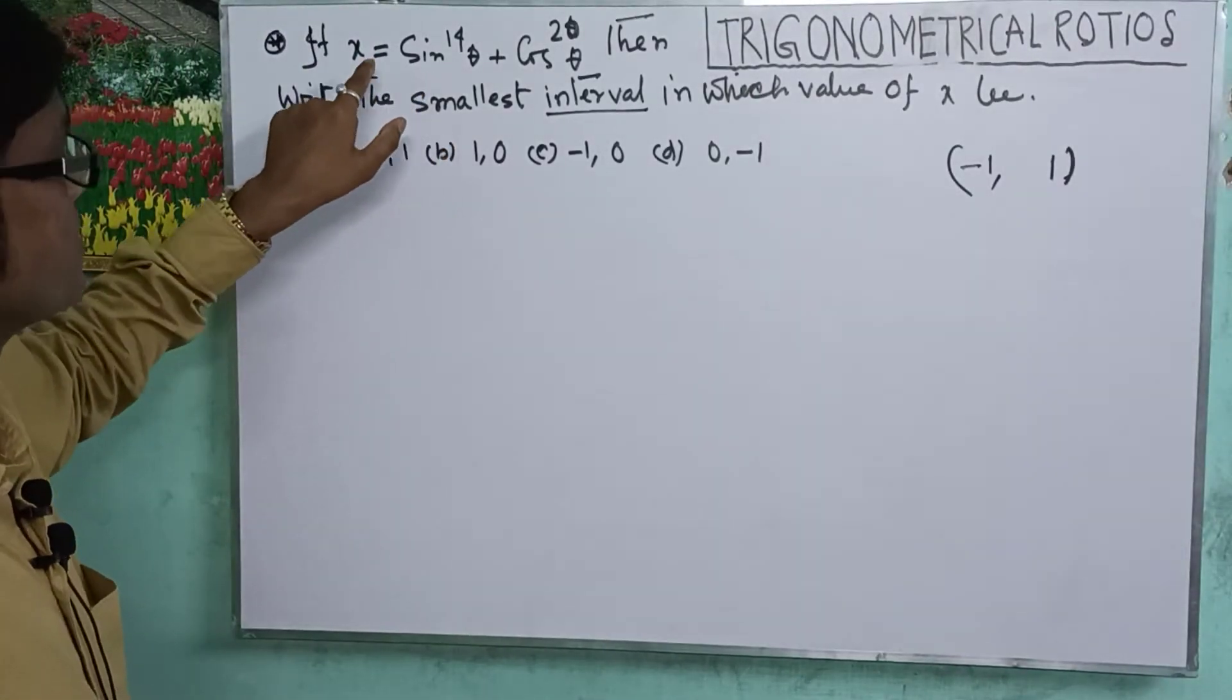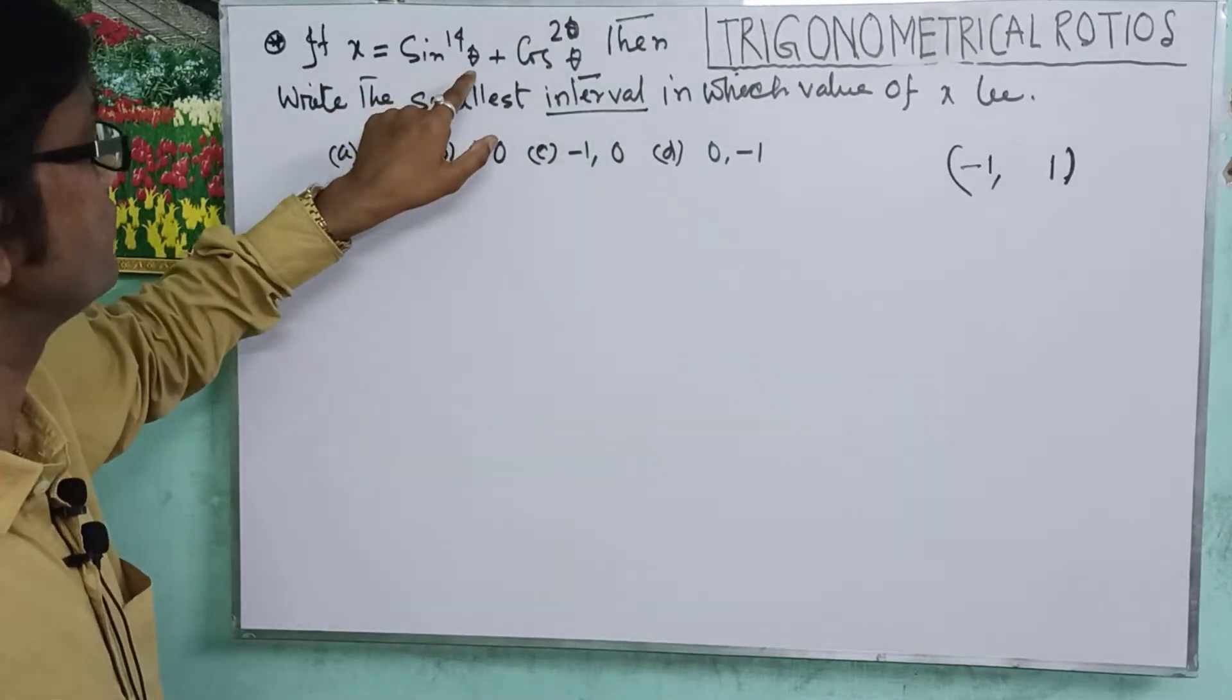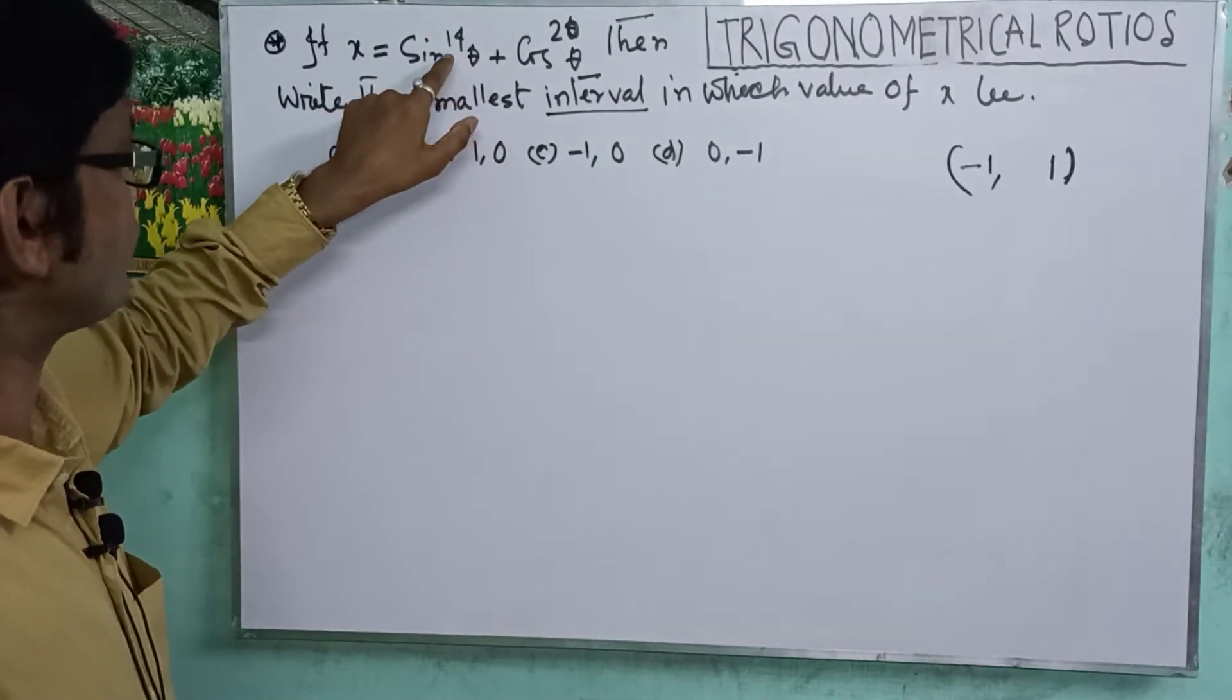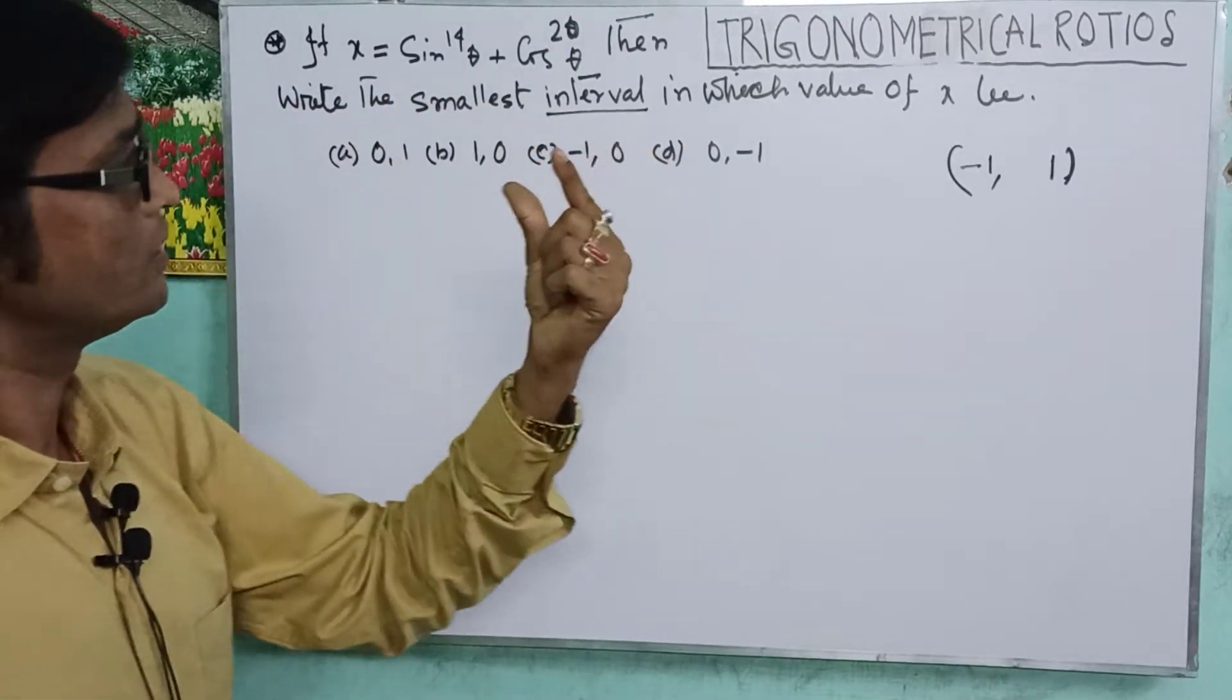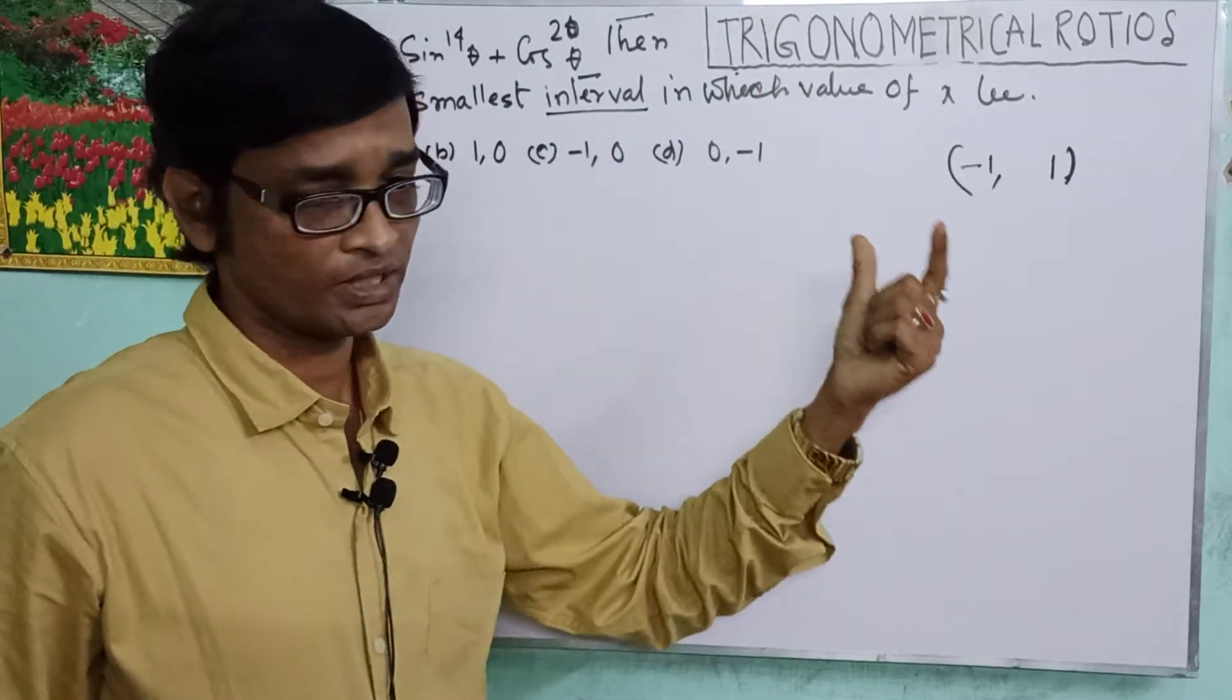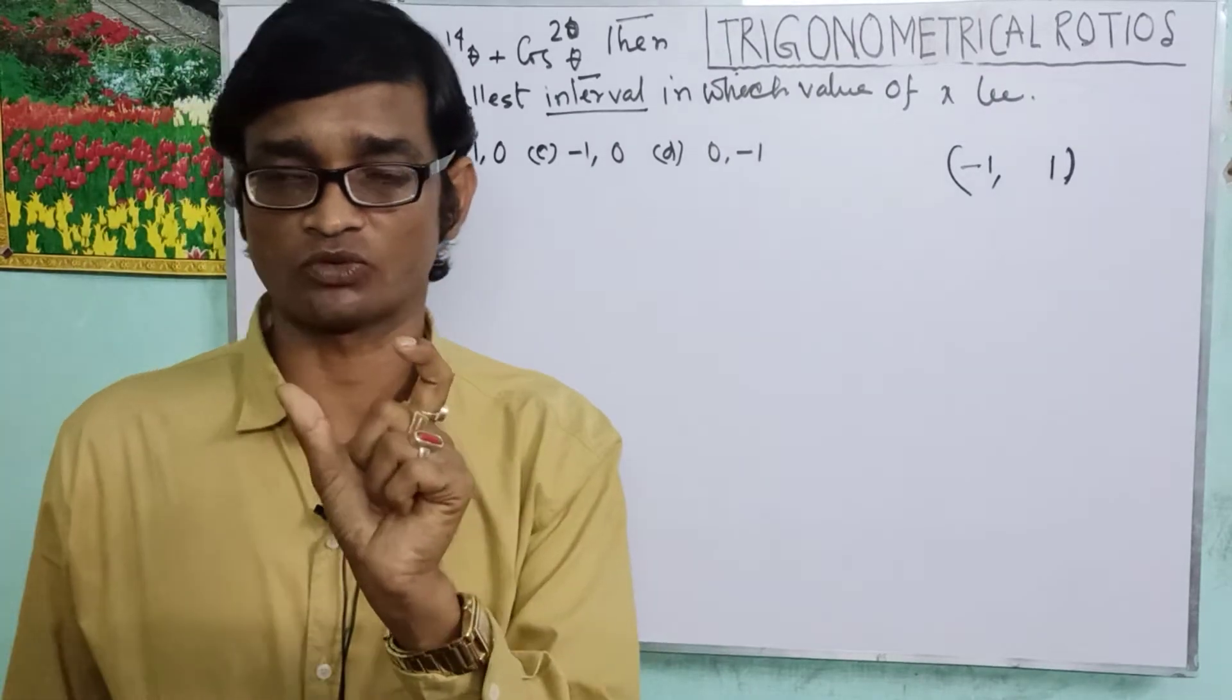So here is the question: X is equal to sin squared 14 theta plus cos squared 20 theta. Here, write the smallest interval. What is the value of X?